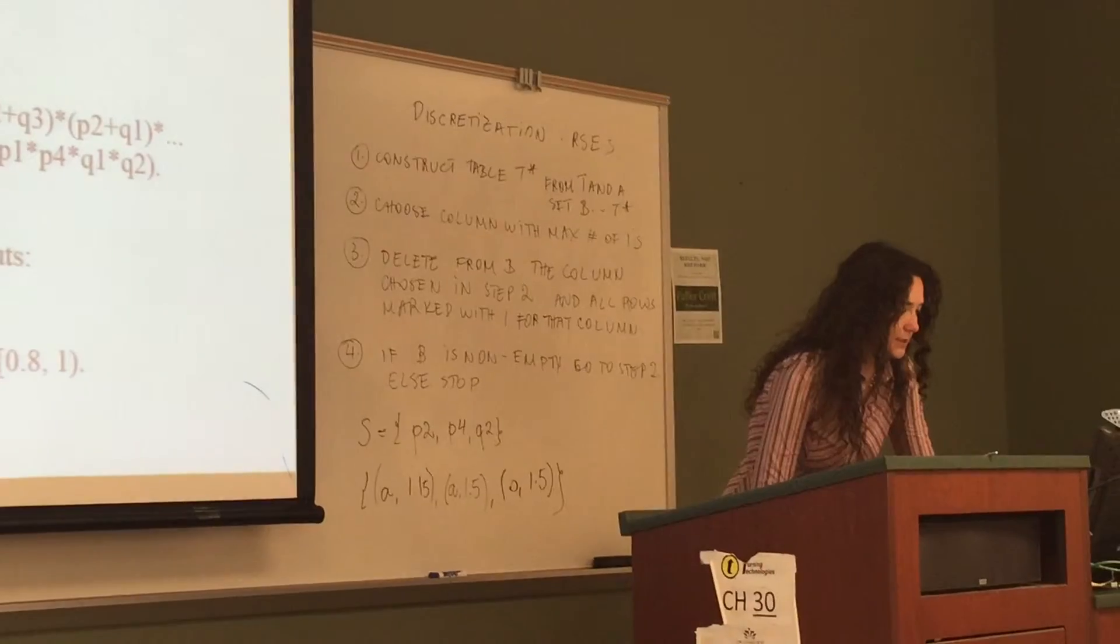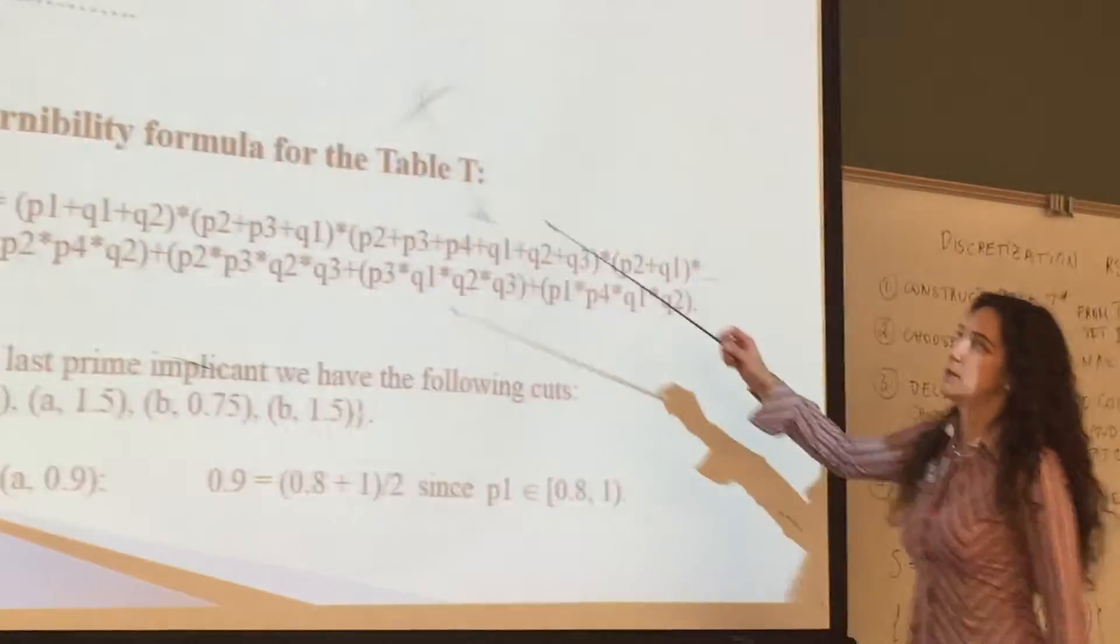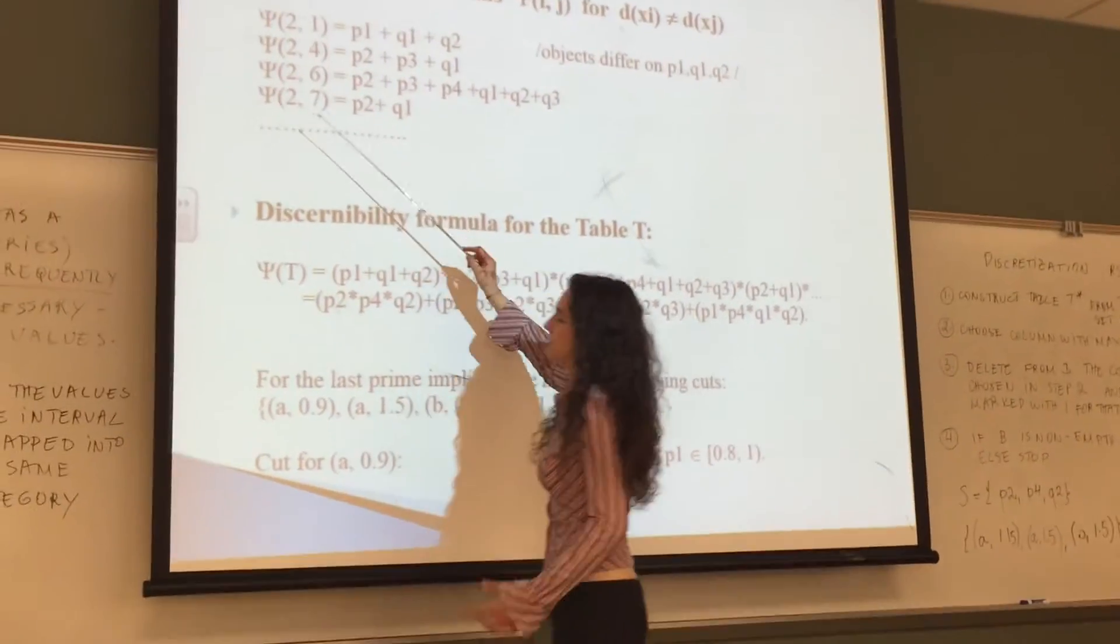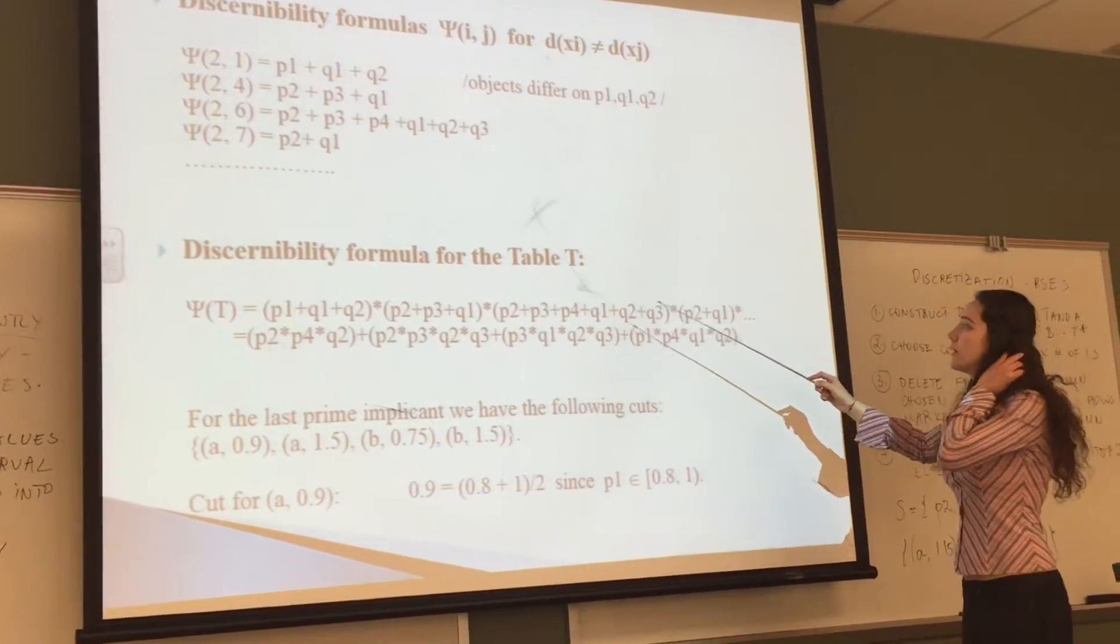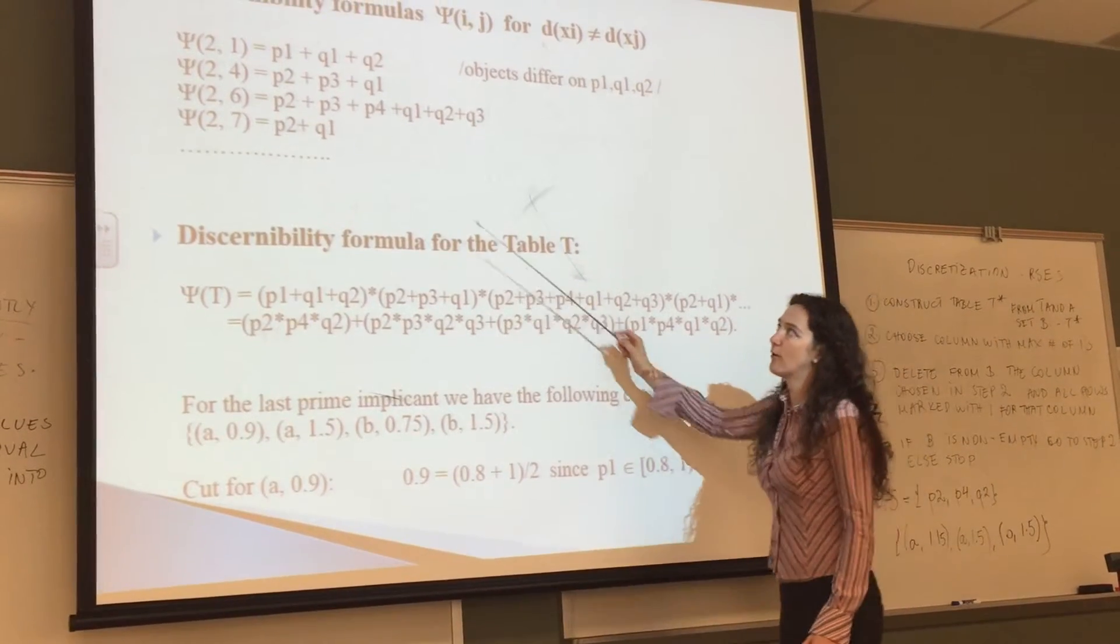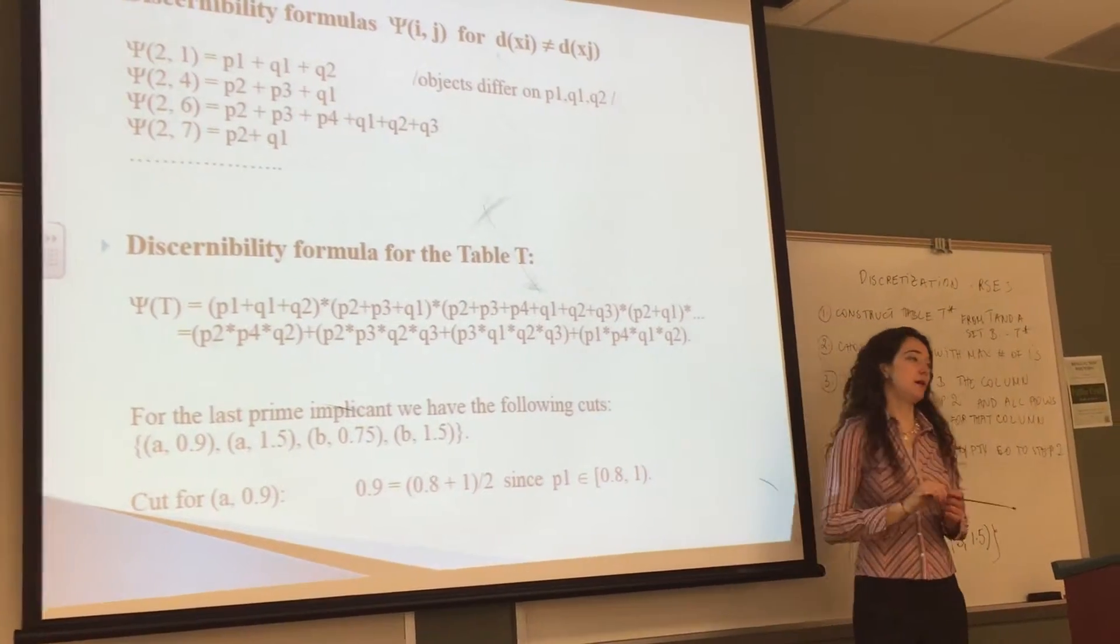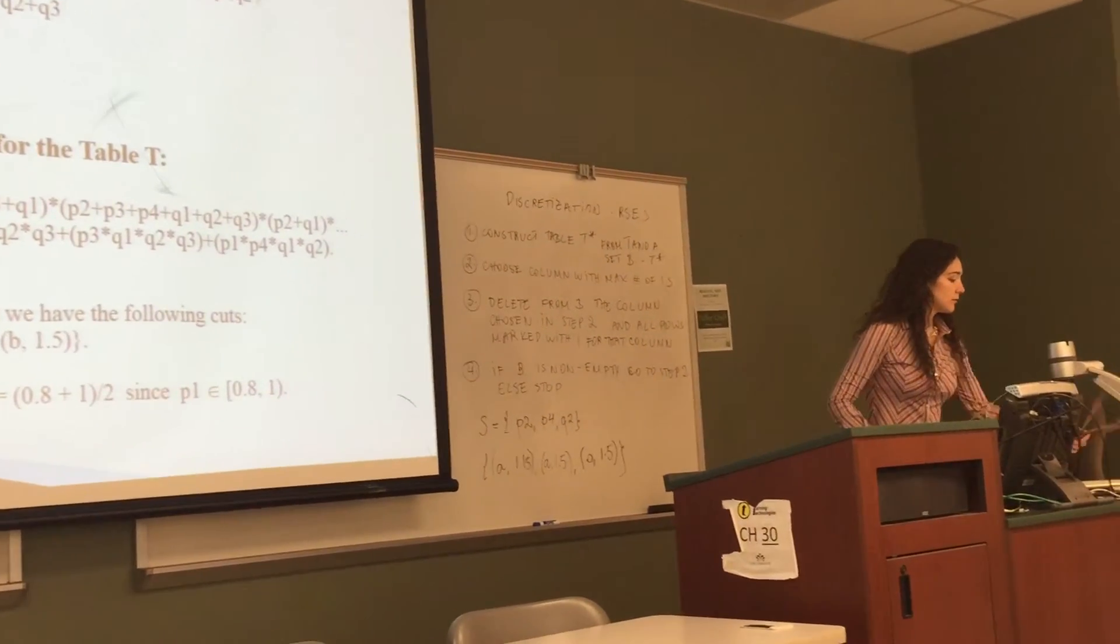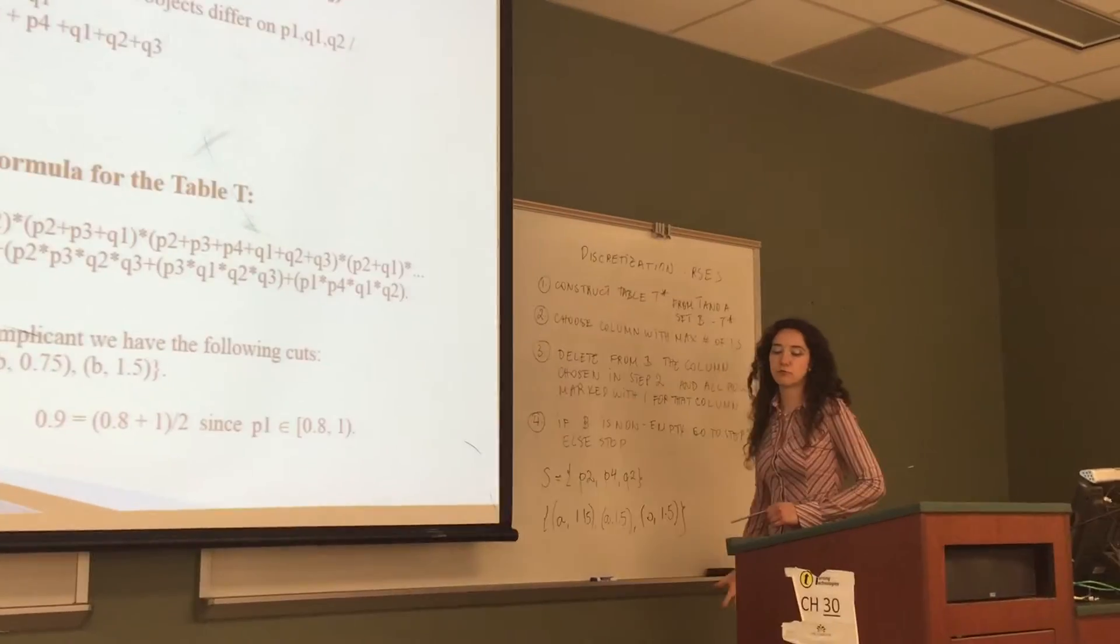So essentially what this did is, after we compute these cuts for all the objects that differ on the decision attribute, we need to create a discernibility formula and the way we create this formula is by taking conjunctive normal form of all of these.